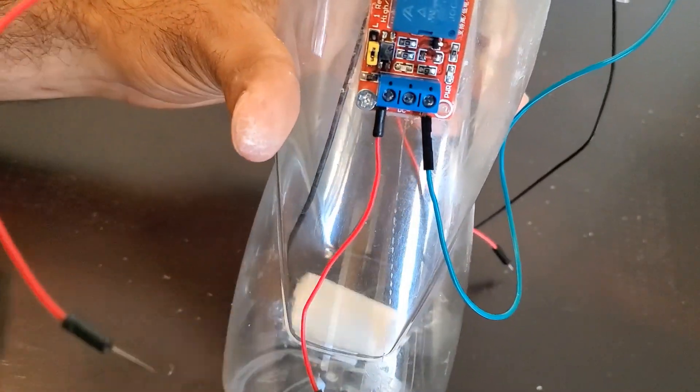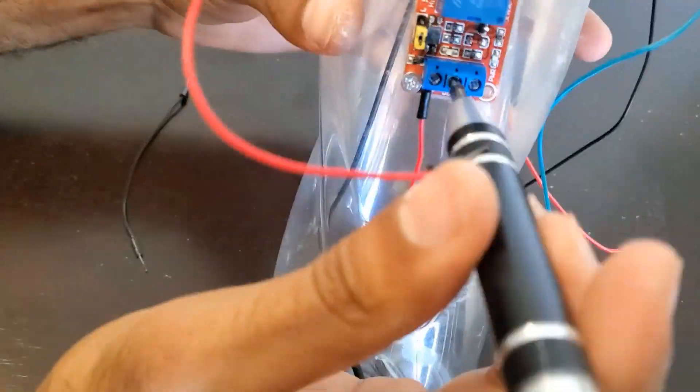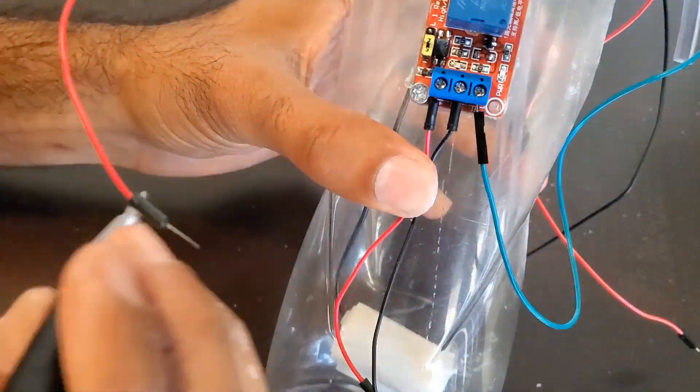Next, we'll need to add a red jumper wire to the plus and a black jumper wire to the minus of the relay.